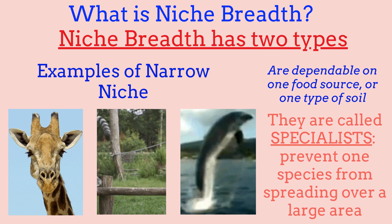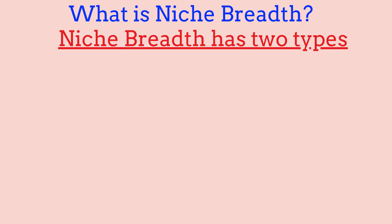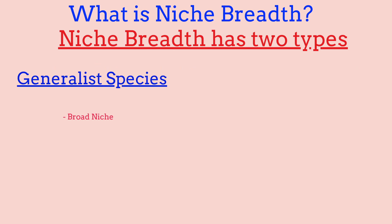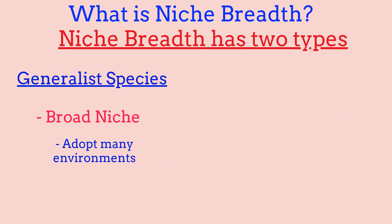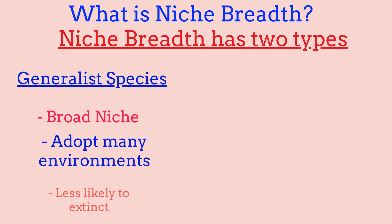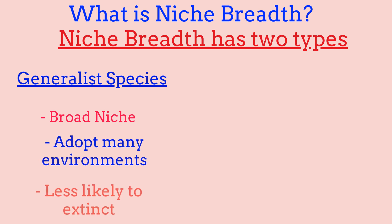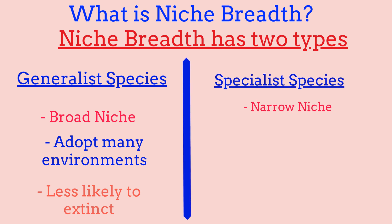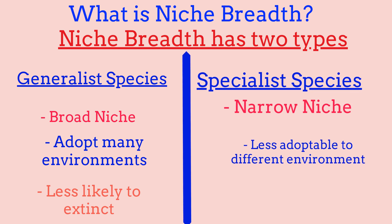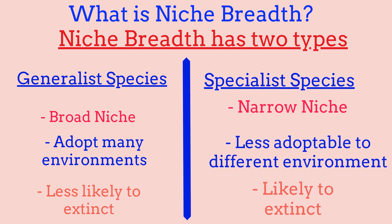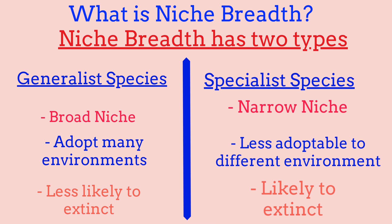Here are some key differences between generalist and specialist species. Generalist species have broad niches, are able to adapt to many environments, are less likely to become extinct, and can tolerate many environmental changes. Specialist species have narrow niches, are less adaptable due to specialized needs, are more likely to become extinct, and cannot tolerate environmental changes.